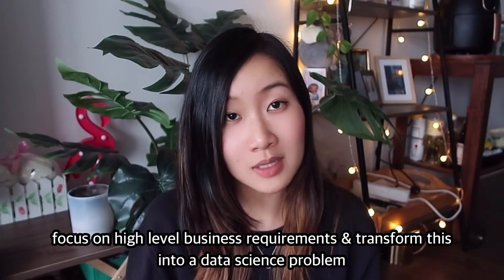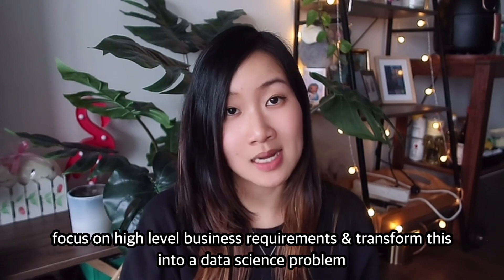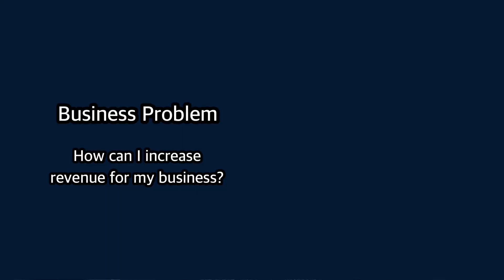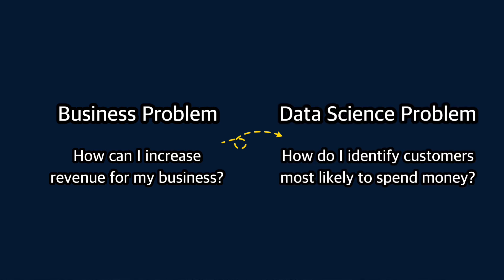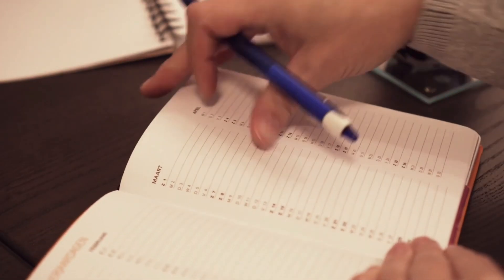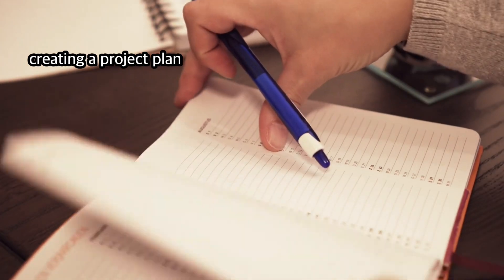Think about what your CEO wants to accomplish and then turn this into a data science problem. For example, your business problem could be: how can I increase revenue for my business? And your corresponding data science problem would be: how do I best identify and target the customers who are most likely going to transact? Next, project planning begins, generally involving the teams coming together and drawing out a project plan.